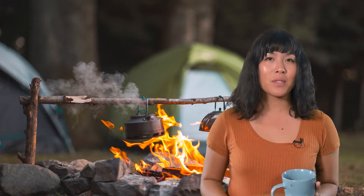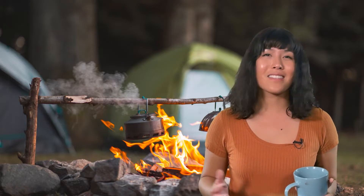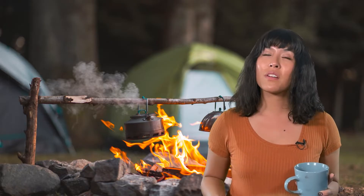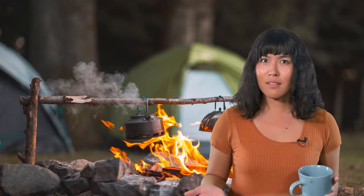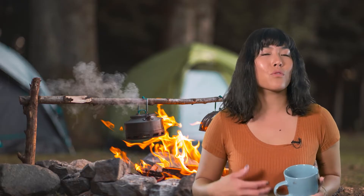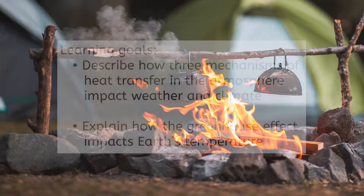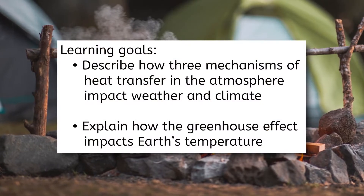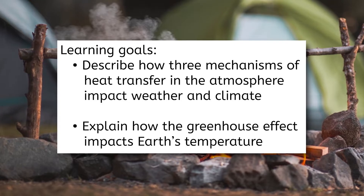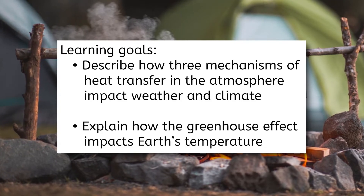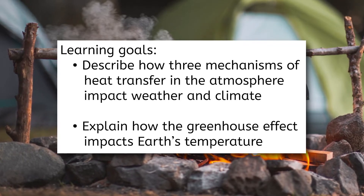Gases in the atmosphere help to keep enough heat near Earth's surface to sustain life. As this heat moves through the atmosphere, it contributes to weather and climate. But where does this heat come from? And how exactly does heat move through the atmosphere, impacting weather and climate patterns? Today we'll describe how three different mechanisms of heat transfer in the atmosphere impact weather and climate. We'll also learn more about the greenhouse effect and explain how it impacts Earth's temperature. Let's dive in!